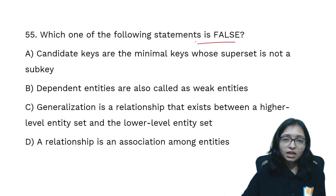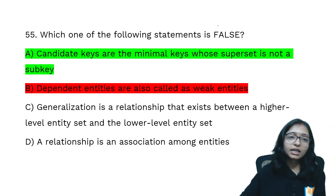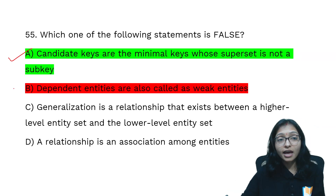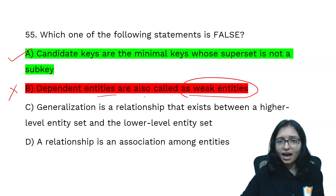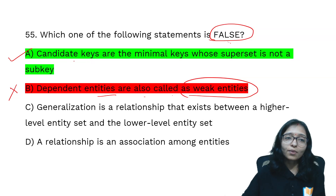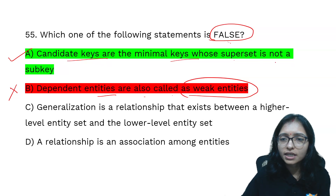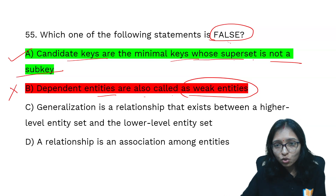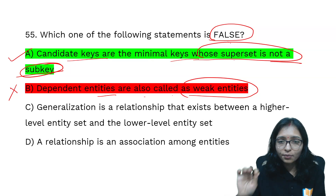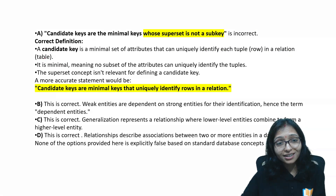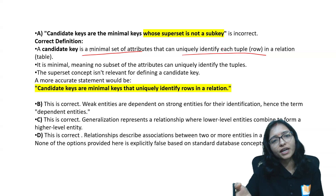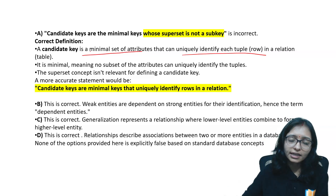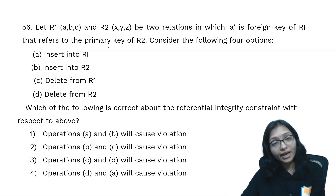The next question asks which of the following statements is false — this is regarding candidate key. Our answer key says one option is correct, and the official answer key gives a different one, which is definitely wrong. Dependent entities are also called weak entities — that is correct. The statement 'candidate key are the minimal key whose super set is not a sub key' — there is a problem in this statement. A candidate key is a minimal set of attributes that uniquely identifies a tuple.